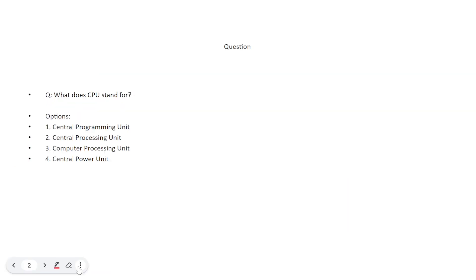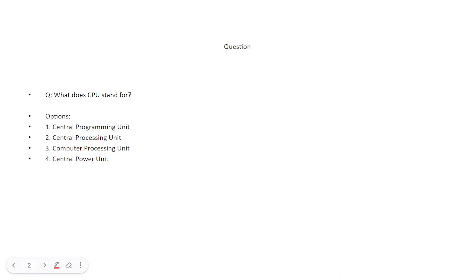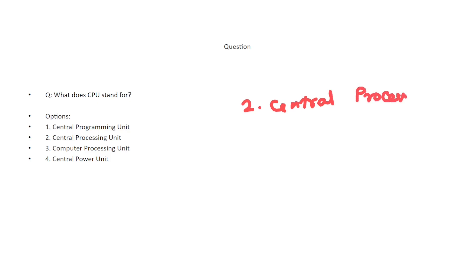First question: What does CPU stand for? The options are: central programming unit, central processing unit, computer processing unit, and central power unit. The correct answer is option B — central processing unit.